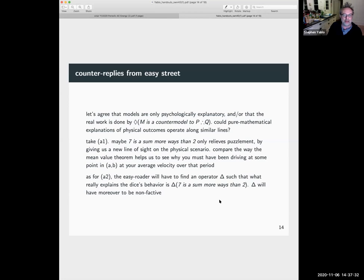Compare the way the mean value theorem helps us to see why you must have been driving at some point in a certain period at your average speed over that period, right? If the police pick you up after an hour-long drive and say, look, your average velocity over this period was 90 miles an hour and it's illegal to drive 90 miles an hour, you can't say, well, I never, at no point in time was I driving at exactly 90 miles an hour, not that that's what the law prescribes specifically, because of the mean value theorem, you're at some point bound to be driving at your average speed over that period.